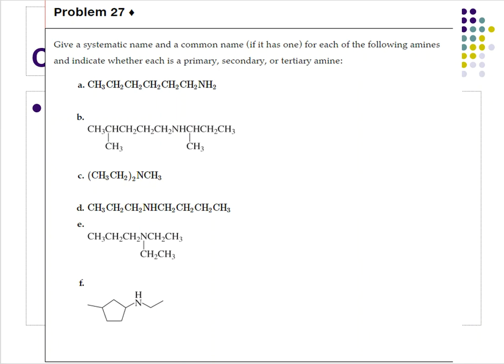We're off to another video about nomenclature of amines. If you paid attention to the last video, I told you this is what it was going to be. This problem says: give the systematic name (IUPAC) and common name, if it has one, for each of the following amines, and indicate whether it's primary, secondary, or tertiary. We're going to IUPAC these first since they all have IUPAC names.